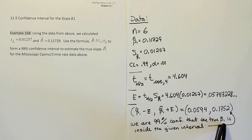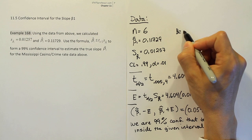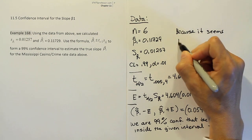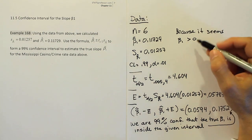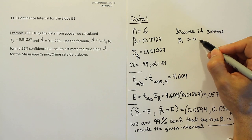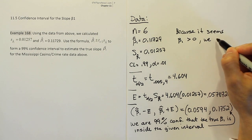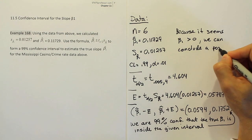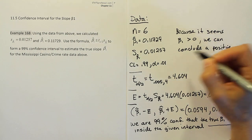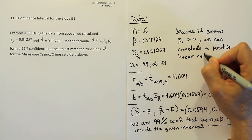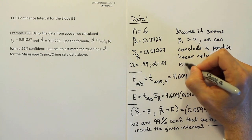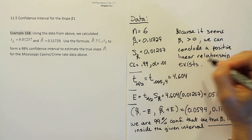if the true slope is a positive number, that expresses the idea of a positive linear relationship. So don't forget, because it seems that beta 1 here is greater than 0, based on the interval, right? Because it seems beta 1 is greater than 0, we can conclude a positive linear relationship exists. Alright, and what does that mean?